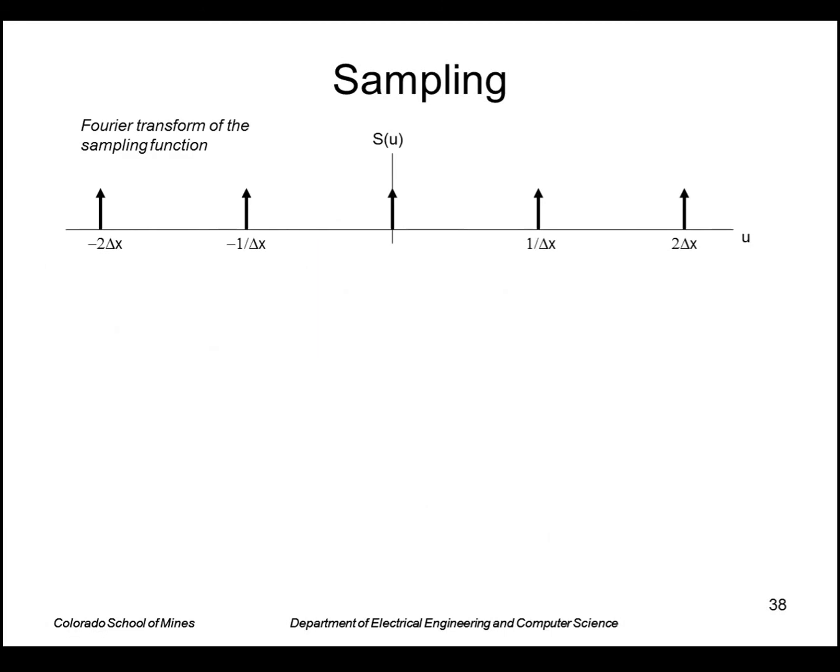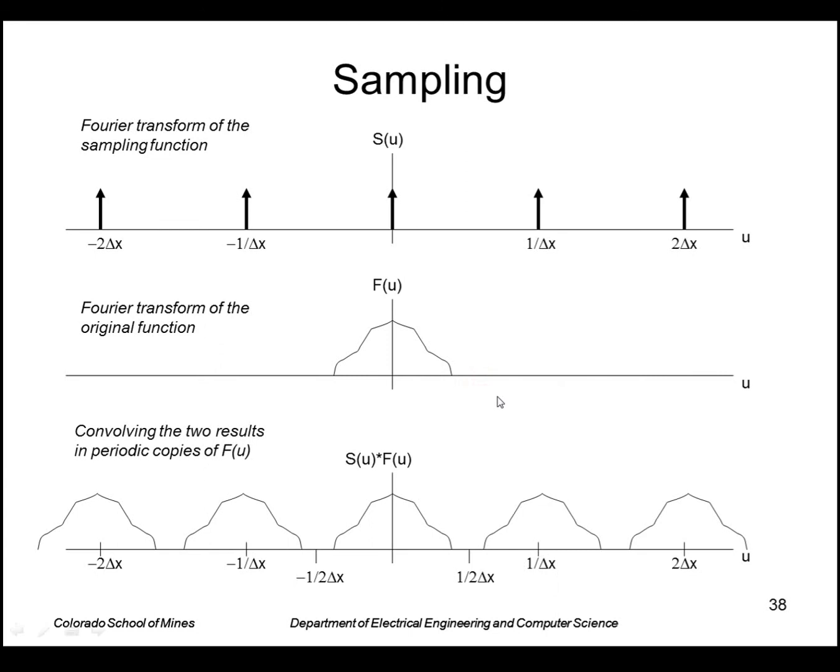So pictorially, it looks like this. Here's my sampling function, its transform, which is a series of impulses separated at 1 over delta x. Here's my transform of my original image. Let's say it's sitting near the origin here and it falls to zero after a certain point.